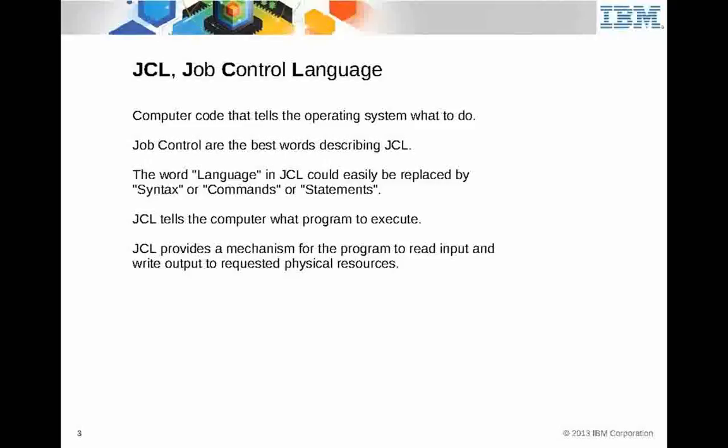JCL, Job Control Language, is computer code that tells the operating system what to do. The word 'language' is a little bit of a misnomer — it's not really a programming language. It's more like job control syntax or job control commands or statements. Just think of it as a series of statements.